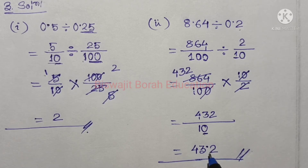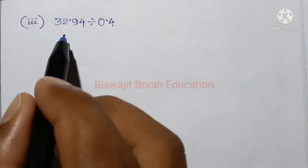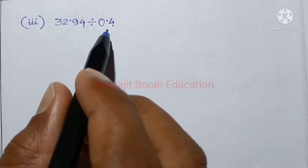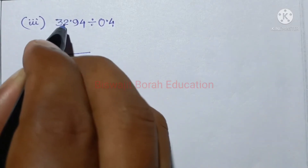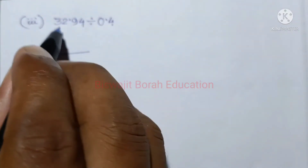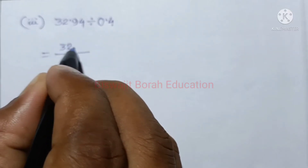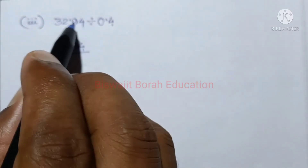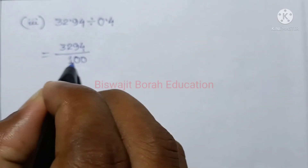This is 43.2. And now this is 32.94 divided by 0.4. This is 32.94. We write 3, 2, 9, 4 and we are here: 2, 2, to the 2, to the 4.